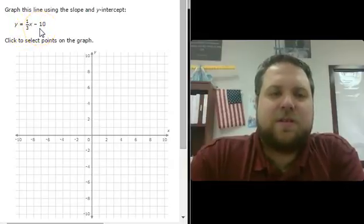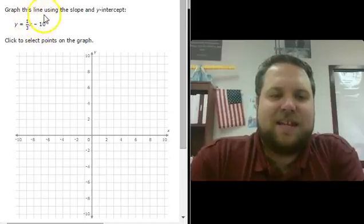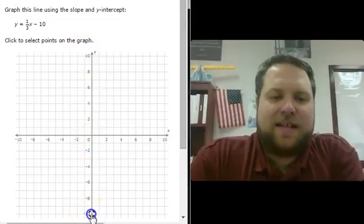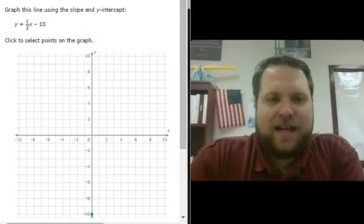We always start with the y-intercept. In this case, the y-intercept is negative 10. So the first thing I'll do on my graph is put a dot at negative 10 on the y-axis.